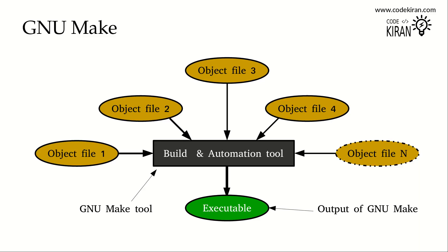Here I show in the picture that this build and automation tool will take all the object files, compile them, and integrate them into a single executable file. When you look inside the build and automation tool, GNU make will actually read some rules, do some pre-processing, and solve all the dependencies to produce the target software product.